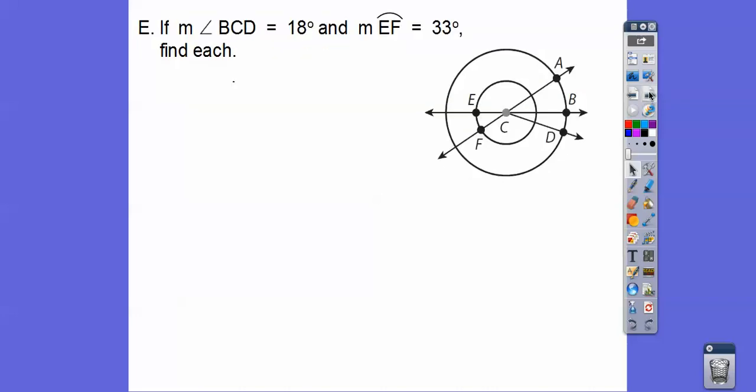So let's go ahead and put in BCD. Here's BCD. So this little angle right here is 18 degrees, and this arc right here is 33 degrees. Let's put those in real quick, and then it says find all of those.